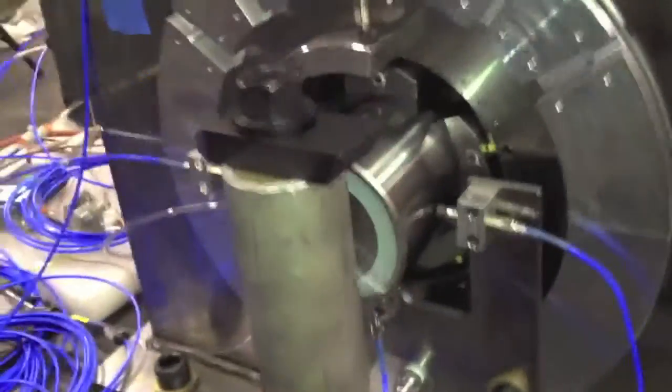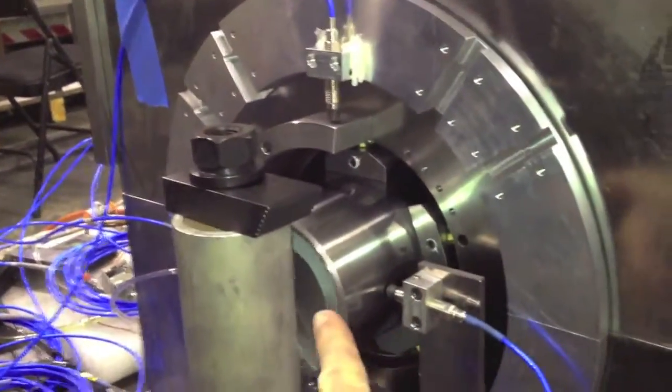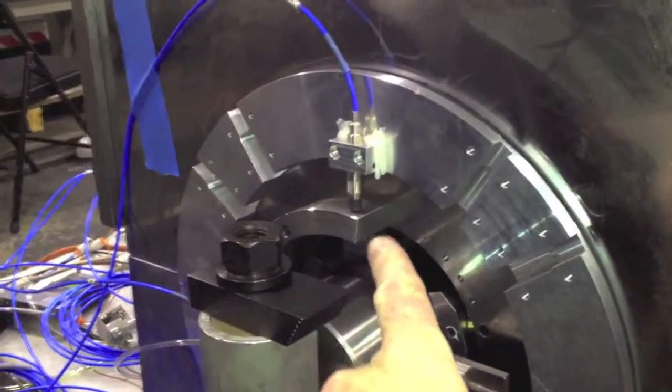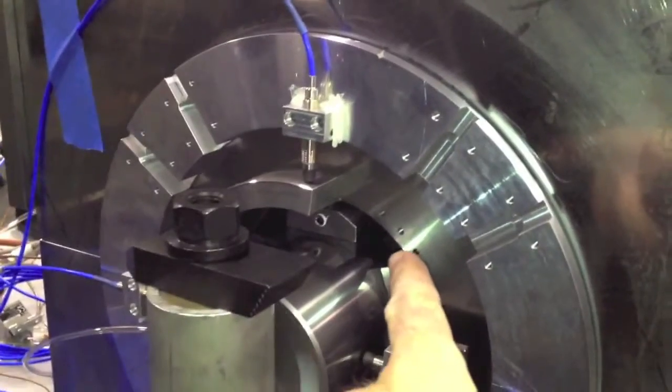At this end, you can see there's four eddy current probes at 90 degrees from each other. Two of them are looking directly at the shaft, and two of them are looking at a target that is connected to the bearing cartridge.